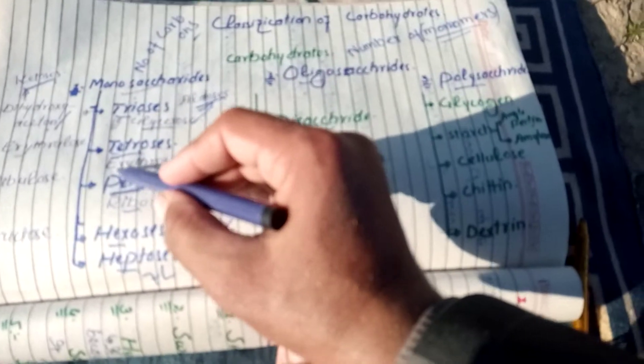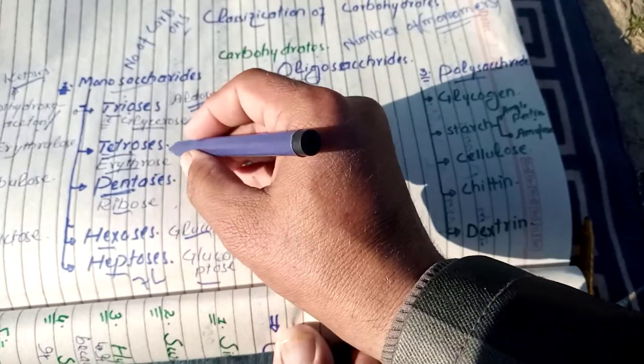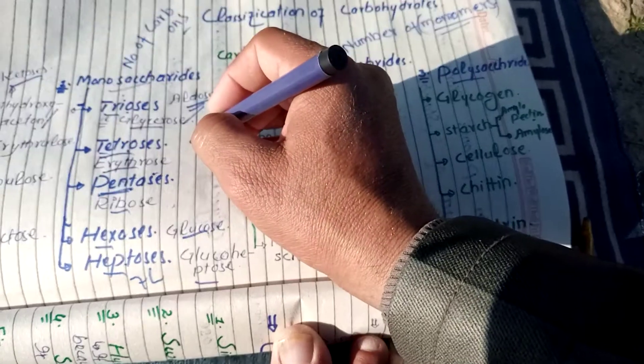Tetrose ka example, erythrose hai. Erythrose mein aldose functional group hai.